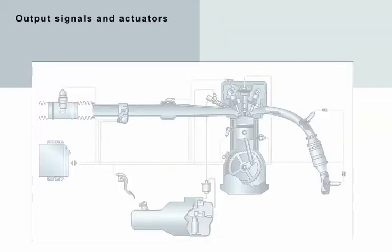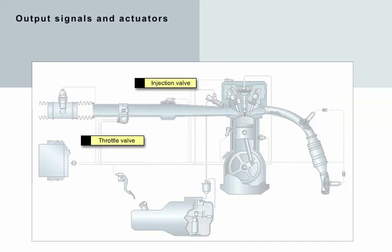The engine control unit basically controls engine running with the use of three actuators: the throttle valve, the injection valve, and the ignition coil or spark plug.